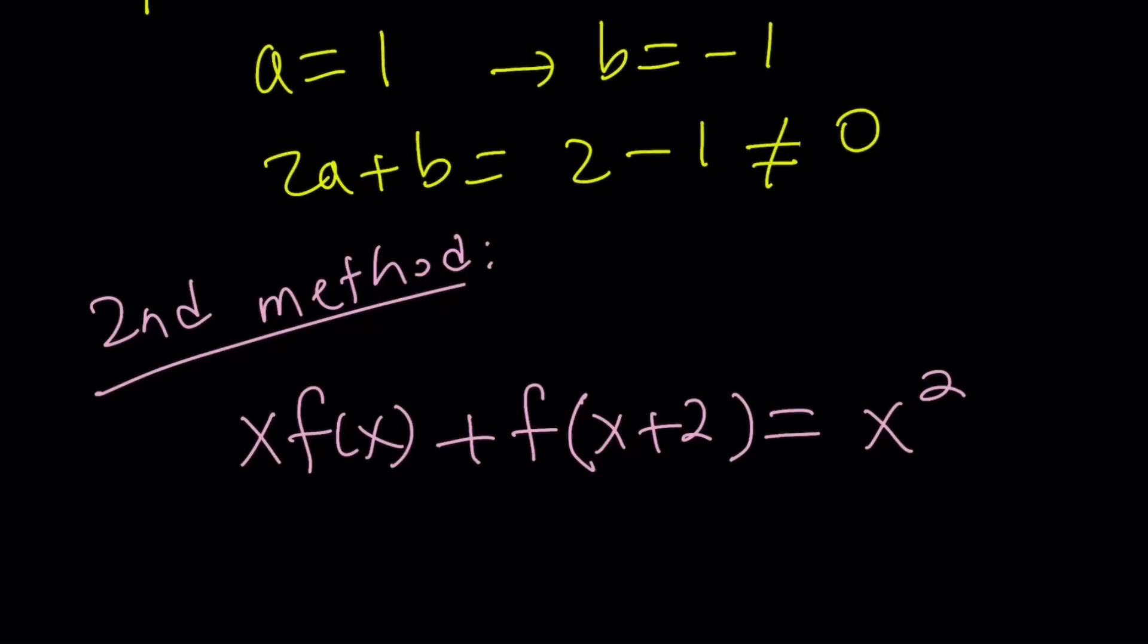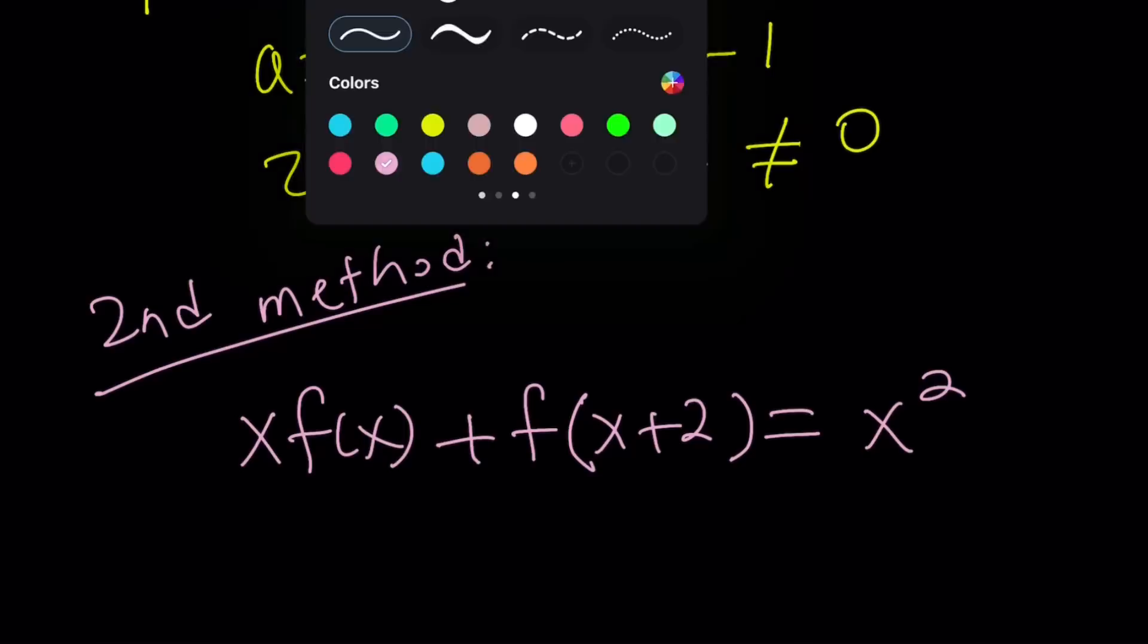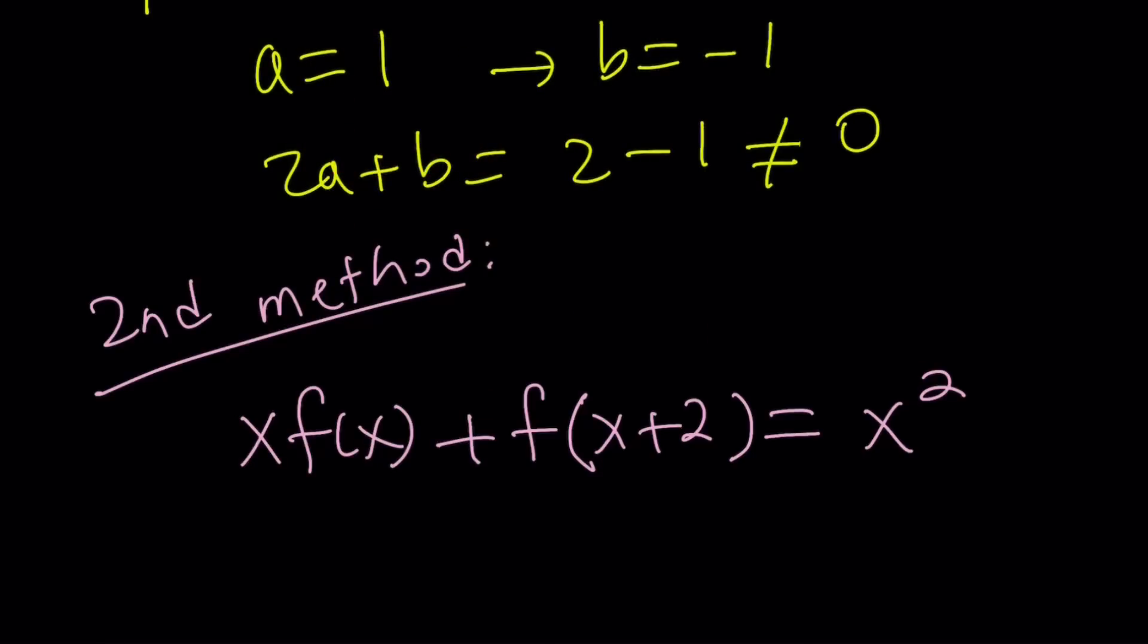We could also discuss what type of function is this. Is it defined from integers to integers, or is it defined from reals to reals? That's going to be another story. Anyways, here's what I'm going to do. So I'm going to find f of 8 directly for my second method, without finding f of x, because I don't think we can find f of x. In this case, please correct me if I'm wrong.